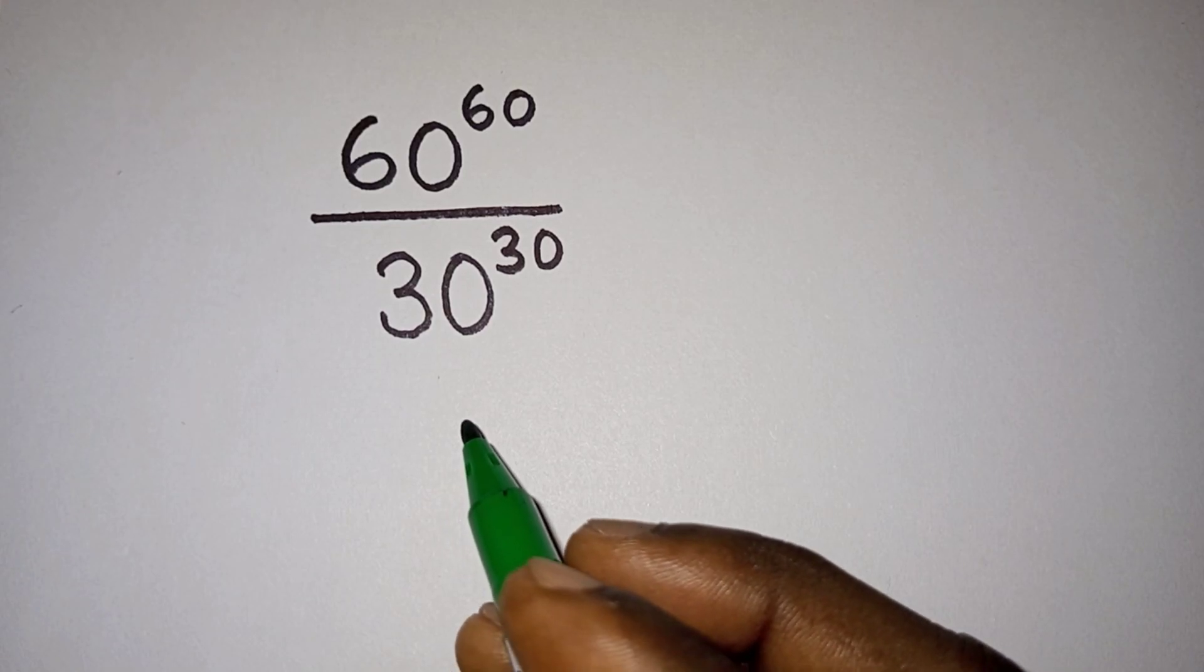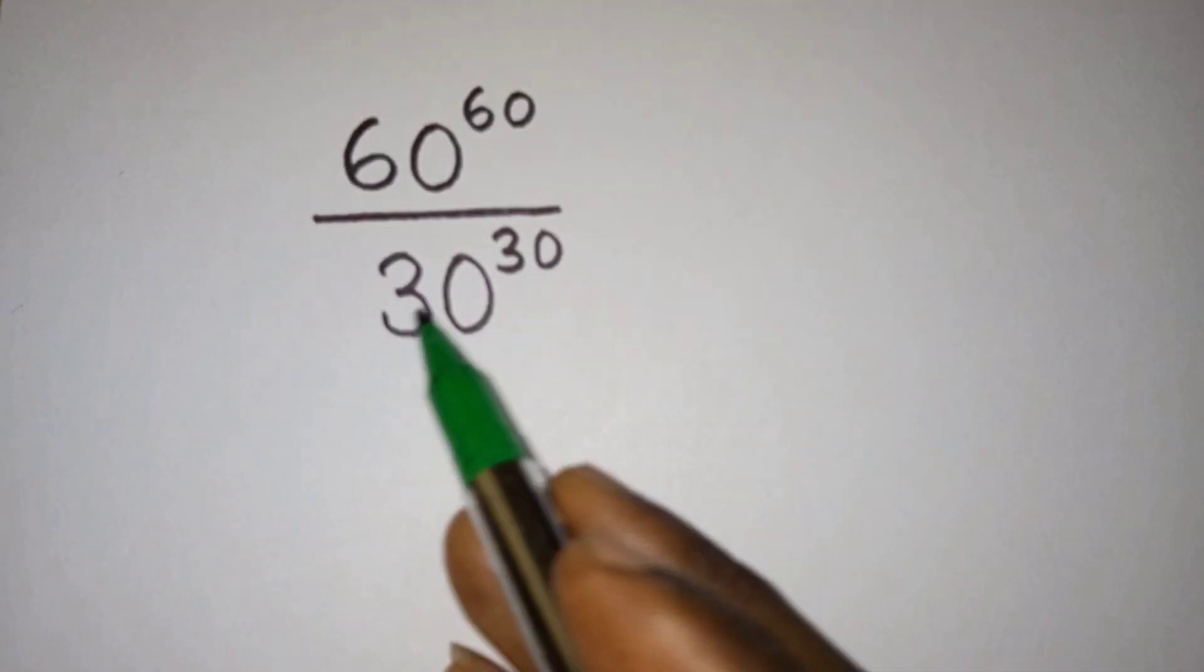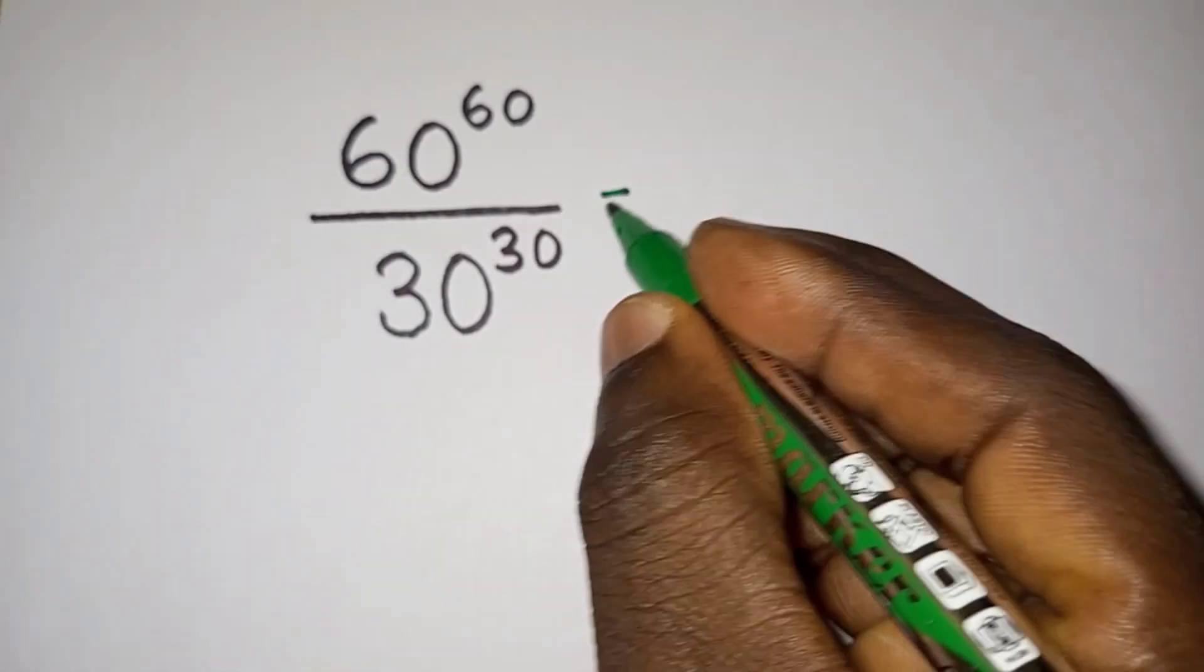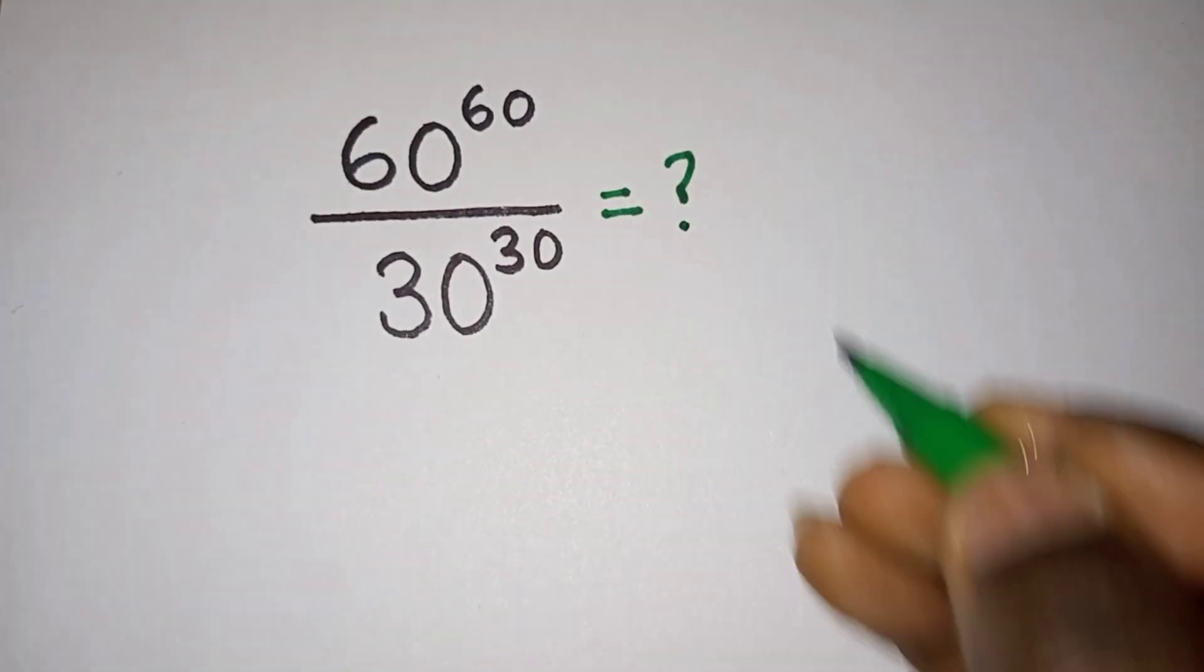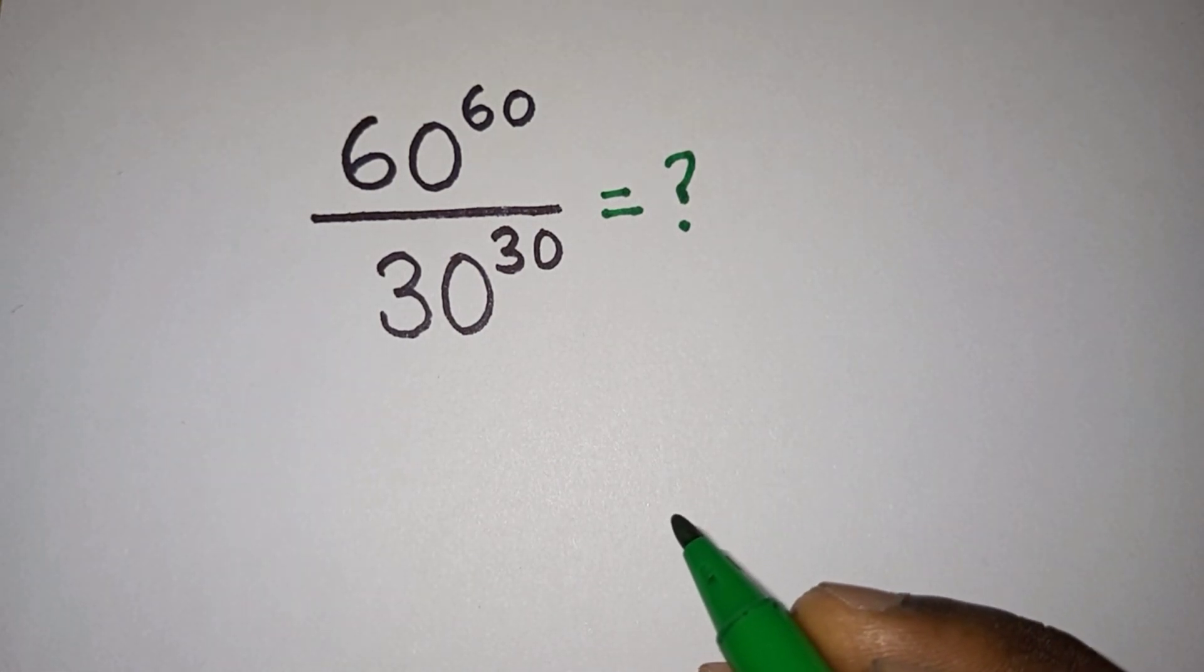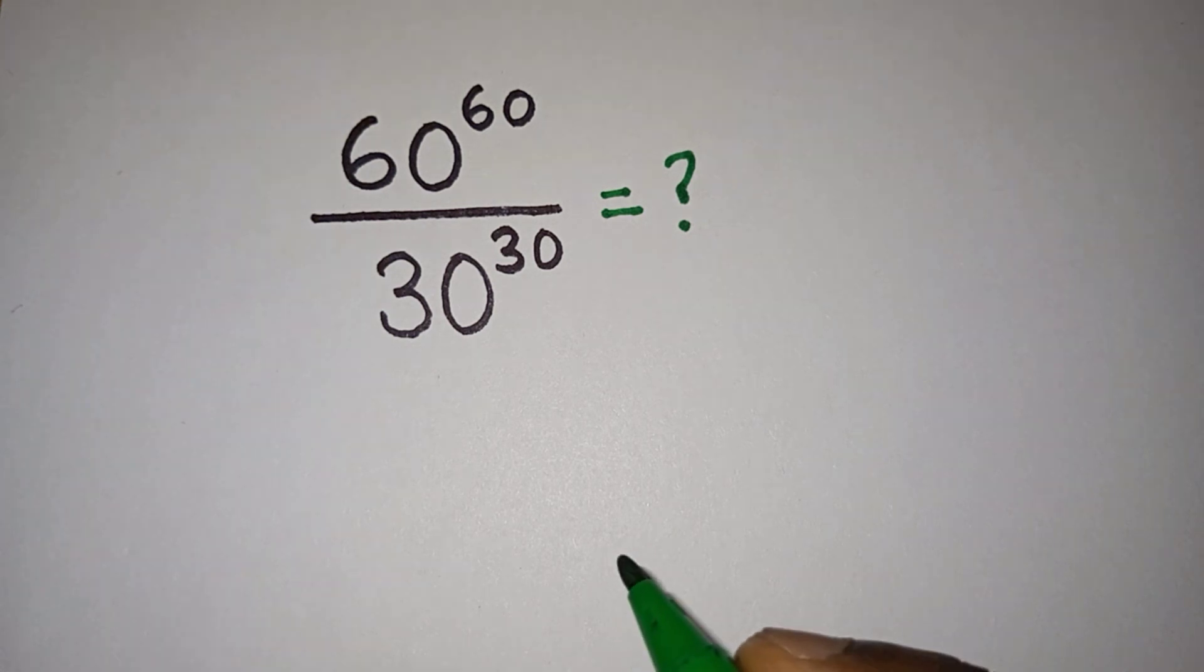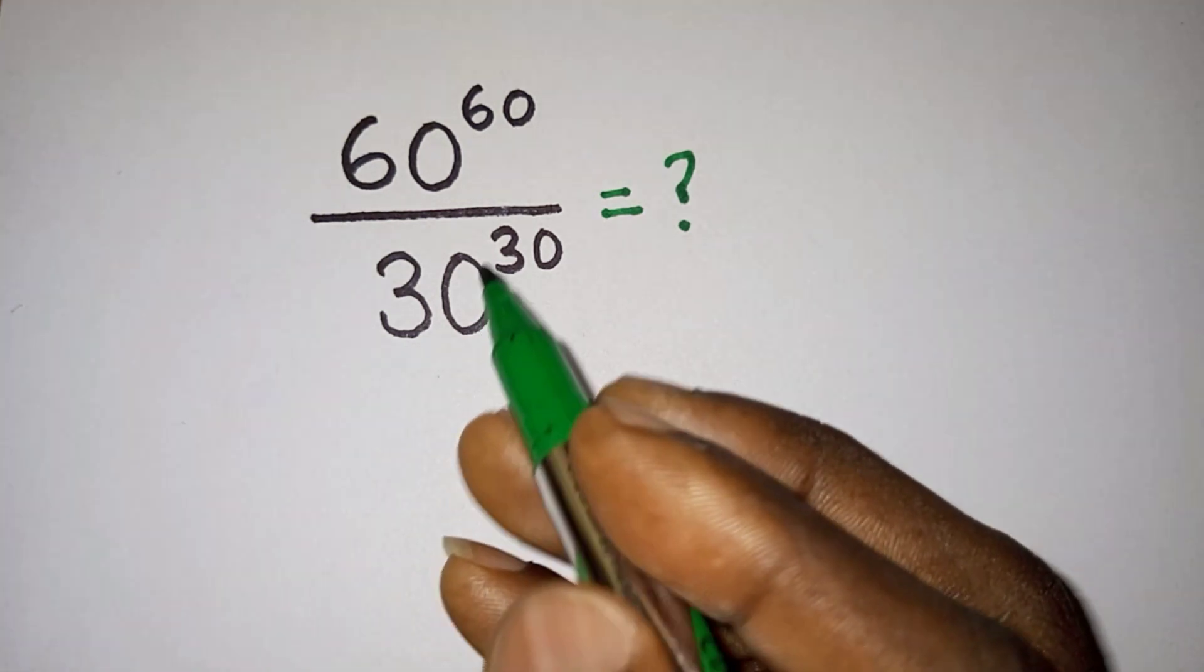Hello everyone, in this video we are given this interesting problem: 60 to the power 60 divided by 30 to the power 30 is equal to what? Pause the video and try this problem first. If you're new here, please subscribe to my channel.